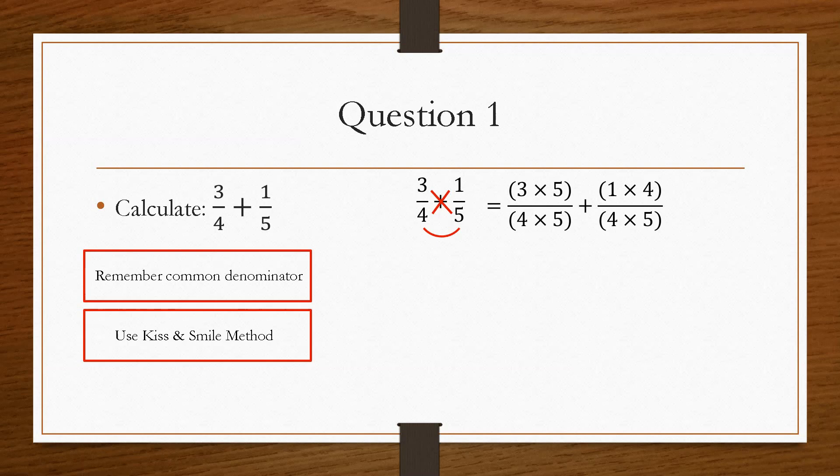And it'll look something like that. So you'll do the 3 times 5, which comes from here. So the 3 times 5 is this section here, divided by 4 times 5, which is here, plus and then 4 times 1, cross multiply, 1 times 4 over 4 times 5.